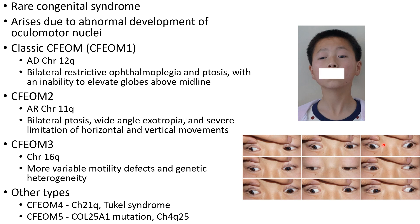CFEOM type 2 is an autosomal recessive condition. In this case there is bilateral ptosis, wide-angle exotropia, and severe limitation of horizontal and vertical movements. In CFEOM type 3, there are more variable motility defects and genetic heterogeneity.